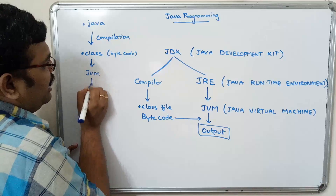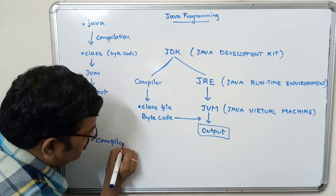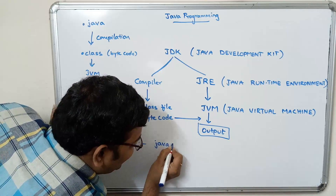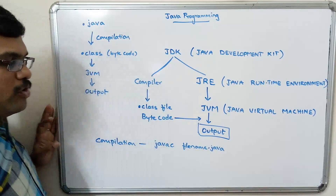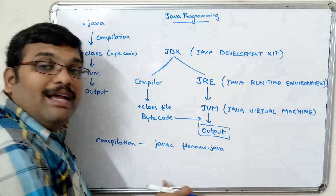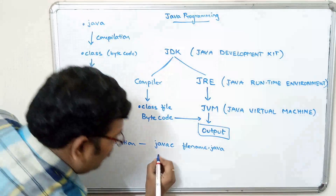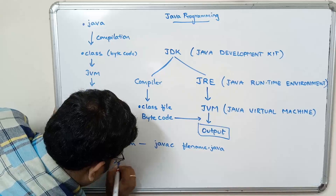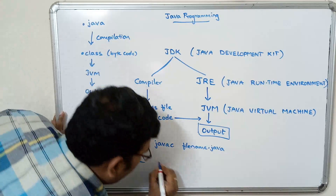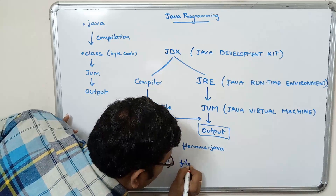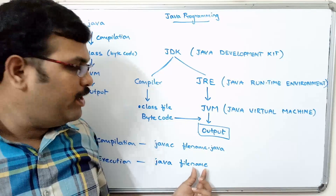This bytecode is given to the JVM and it produces the output. For compiling a Java program, we use the command: javac filename.java. After executing this statement, if there are no syntactical errors, the .class file will be generated automatically, that means the bytecode will be generated. For execution, we use: java filename. Here we do not give the dot extension because it is bytecode — we do not give the .java extension while executing the file.